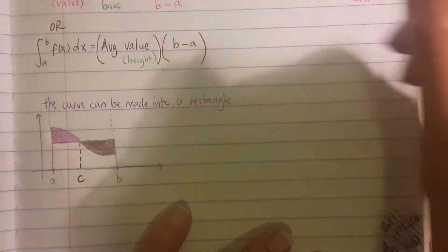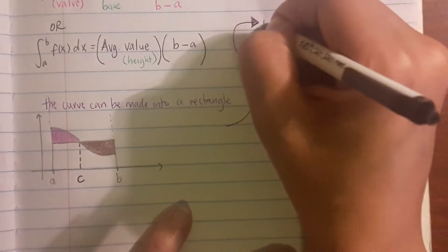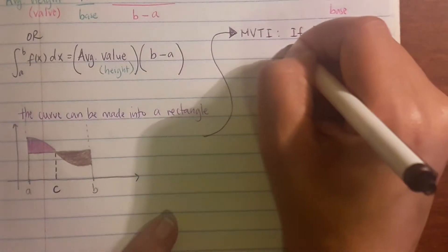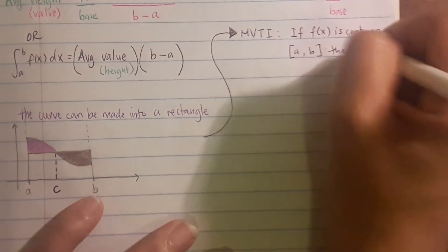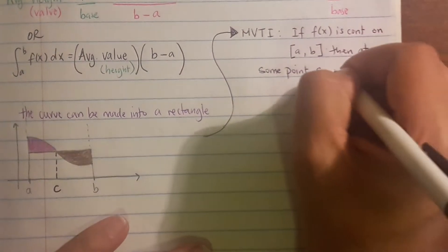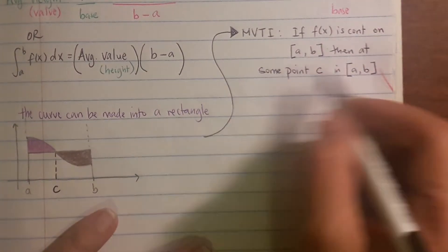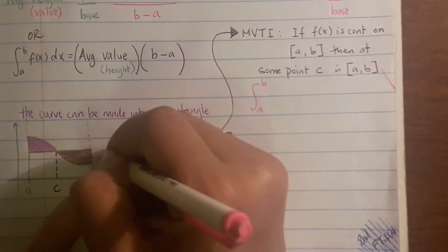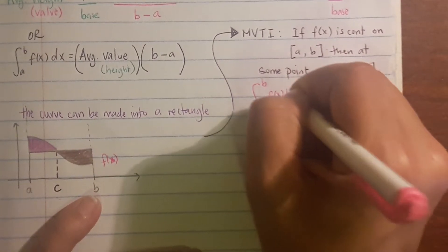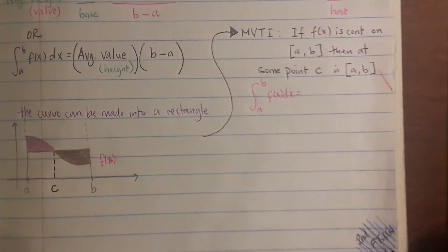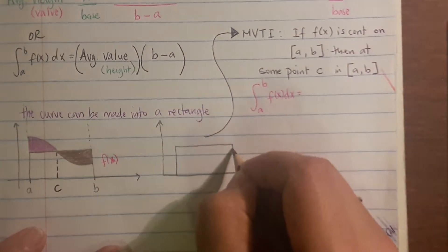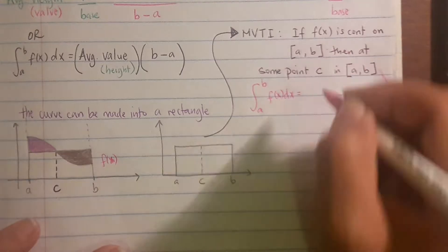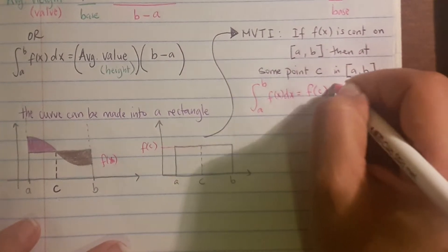This brings us to the Mean Value Theorem for integrals. Call that middle point where this happens point c. The theorem states: if f(x) is continuous on the closed interval [a, b], then at some point c in that interval, the area underneath the curve equals the average height — which is f(c) — times the base. So the area equals f(c) times (b − a).